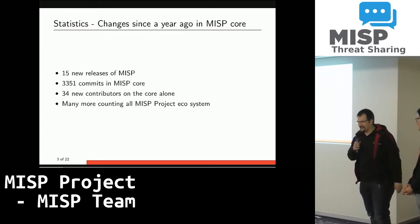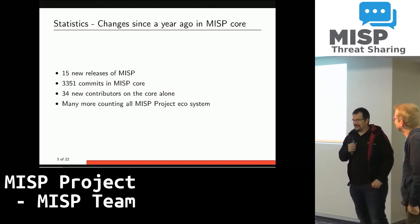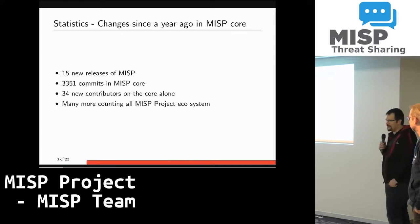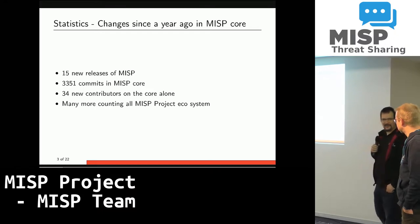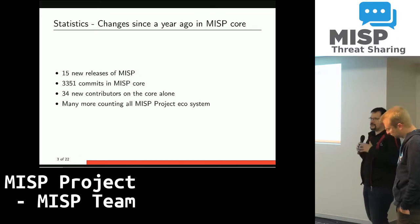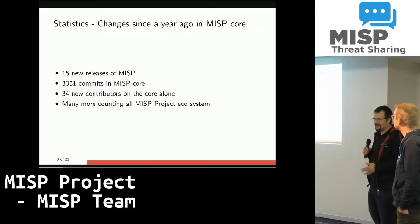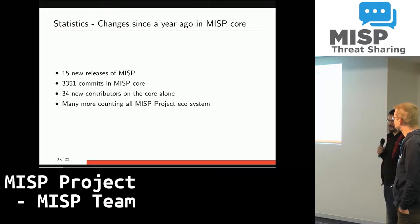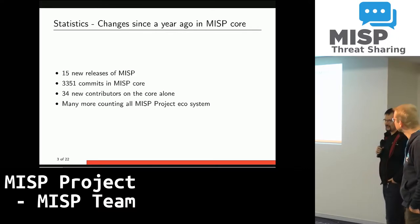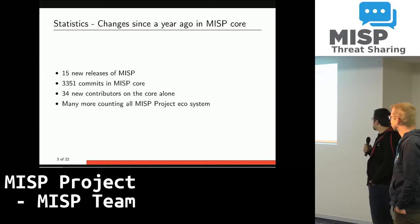A little bit of statistics about what has been going on in the MISP core over the past year. If you've been following MISP development, you might look at the number of releases and think it's a low number. We've changed pace a little bit and are doing larger releases less frequently — down to about one release per month instead of two. With that said, we've had a lot of work done: a total of over 3,300 commits since exactly a year ago, and we've been getting a lot of contributions from third parties.